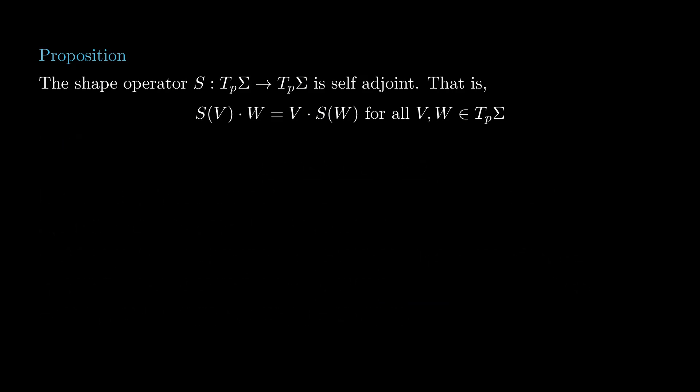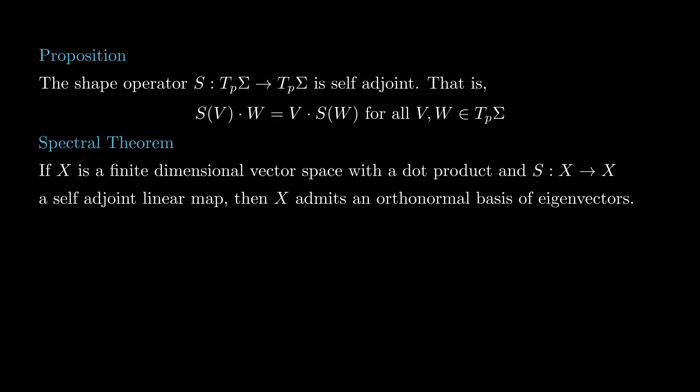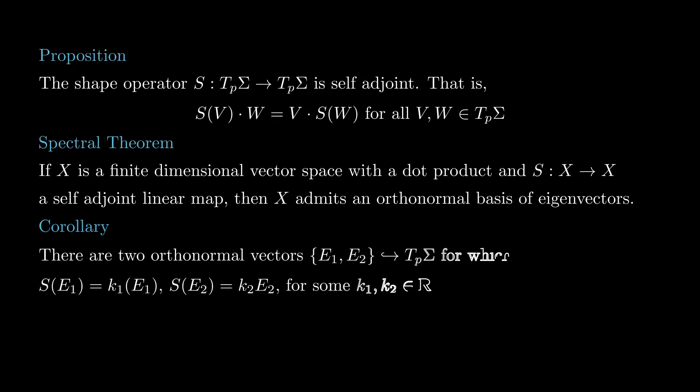Why do we care about this? Recall the spectral theorem: if we have a vector space with a dot product and a self-adjoint linear map S from this vector space to itself, then S is diagonalizable and we can find an orthonormal basis of eigenvectors. Applying this to the shape operator, there are two orthonormal vectors e1 and e2 in T_p sigma for which S of e1 equals k1·e1 and S of e2 equals k2·e2, labeled so that k2 ≤ k1. These two numbers are called the principal curvatures of sigma at p, and the directions of e1 and e2 are called the principal directions.